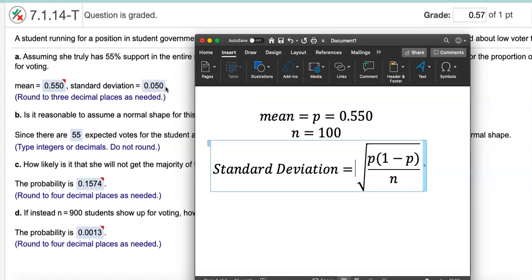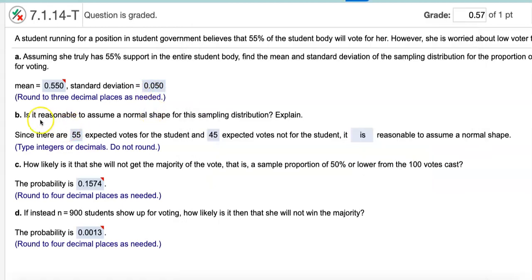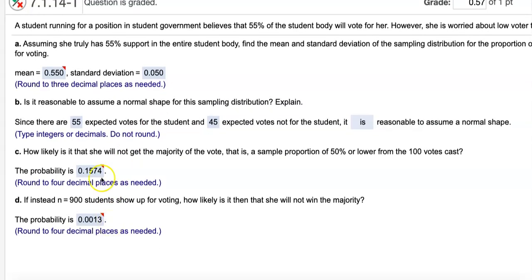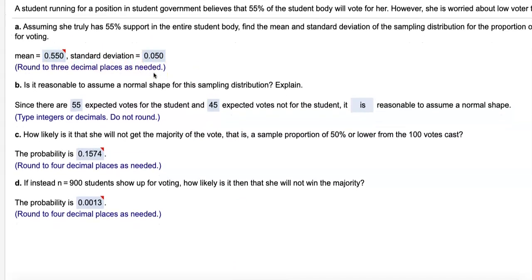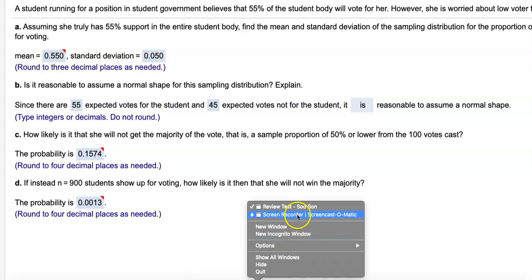In part B, you did a great thing. Is it reasonable to assume a normal shape? Once you say yes, it is reasonable to assume we can use normal distribution to calculate the probabilities in part C and D. You found how many people are expected to vote for her and how many are not expected to vote for her. Both numbers came out to be greater than 15. So we're gonna assume normal shape. That's when you can open up your stat crunch for normal calculator. Make sure you know how to find the mean and the standard deviation.